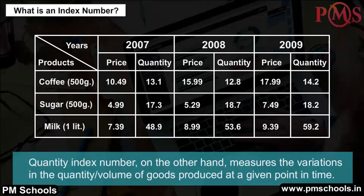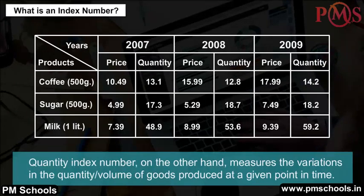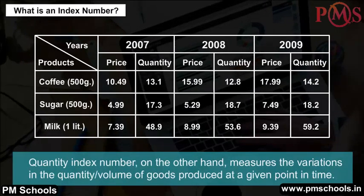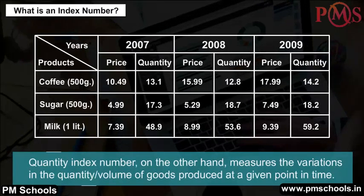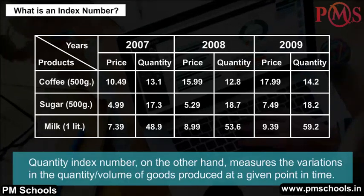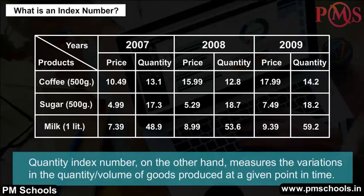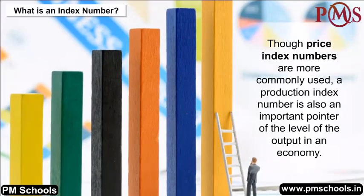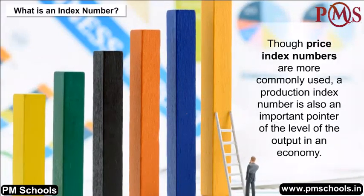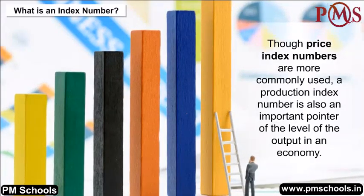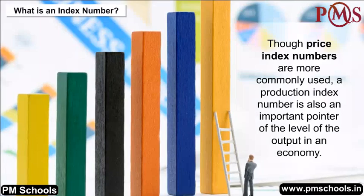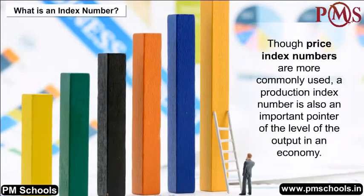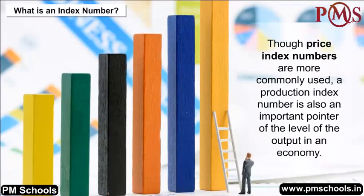A quantity index number, on the other hand, measures the variations in the quantity or volume of goods produced at a given point in time. Though price index numbers are more commonly used, a production index number is also an important pointer of the level of output in an economy.